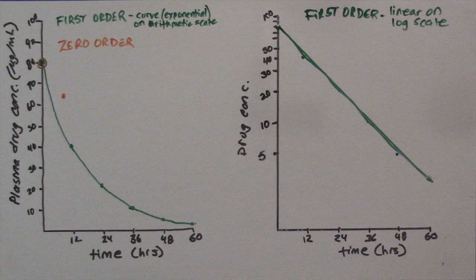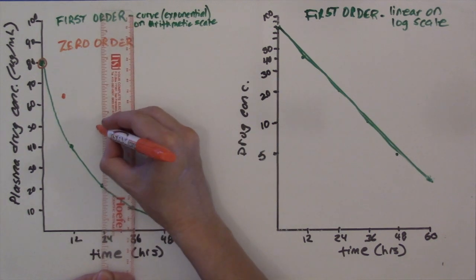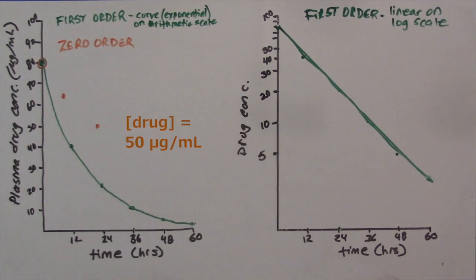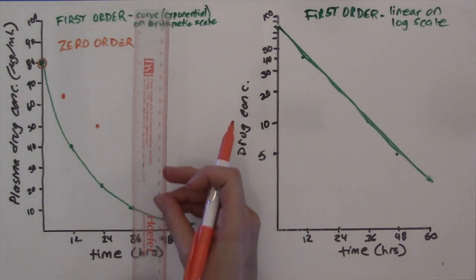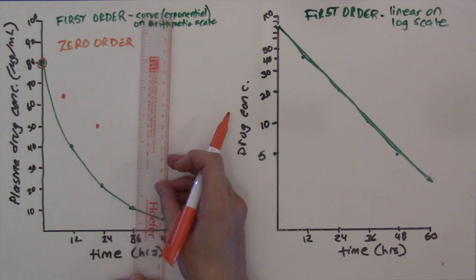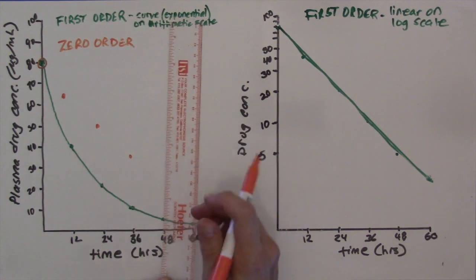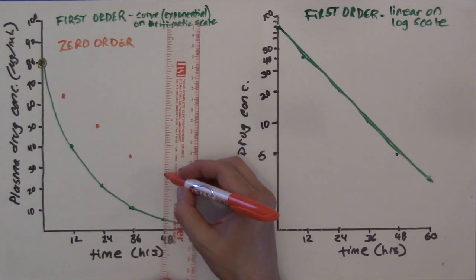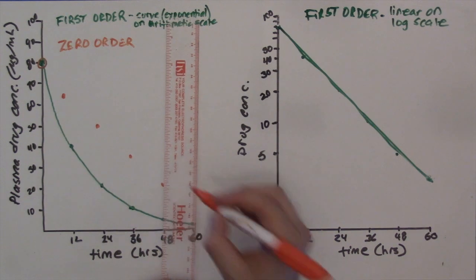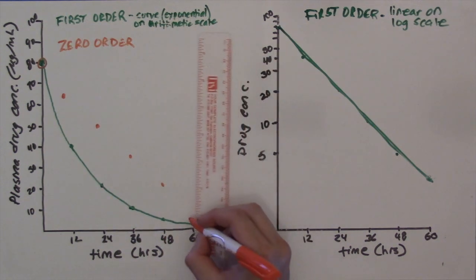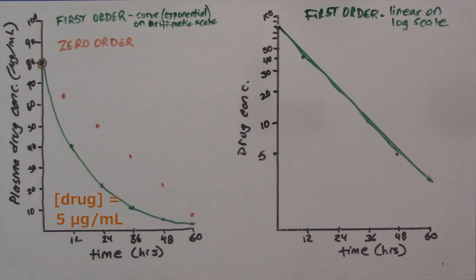Another 12 hours later, and we've eliminated the same amount of drug from the body again, bringing the concentration down to 50 micrograms per milliliter. Another 12 hours later, we're down to 35 micrograms per milliliter. And 12 hours later, we're down to 20 micrograms per milliliter. And another 12 hours later, we're down to 5 micrograms per milliliter.